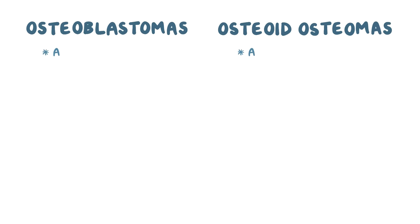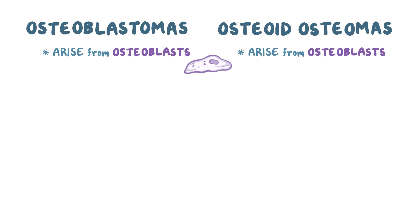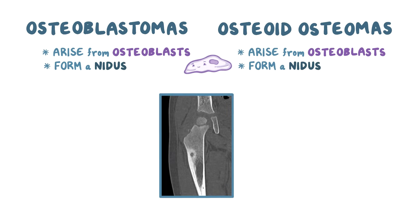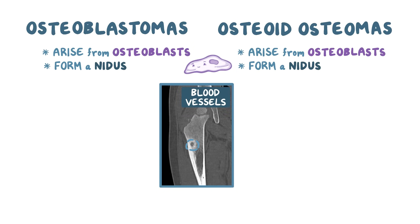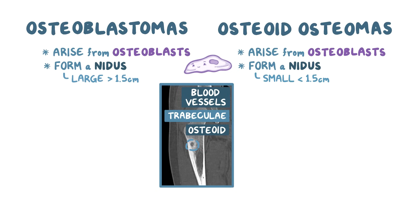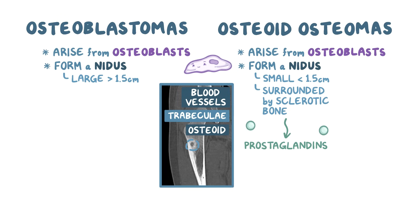Other benign tumors are osteoblastomas and osteoid osteomas, both of which arise from osteoblasts. Both of these tumors classically form a nidus, which is a disorganized mix of small blood vessels, tiny rods of bone called trabeculae, and unmineralized bony tissue called osteoid. In osteoblastomas, the nidi (plural for nidus) are large with a diameter of over 1.5 centimeters. In osteoid osteomas, the nidi are smaller than 1.5 centimeters in diameter and are often surrounded by a ring of sclerotic bone tissue. That ring of sclerotic tissue often produces prostaglandins, which are small molecules that trigger the sensation of pain.